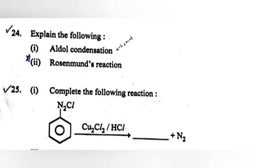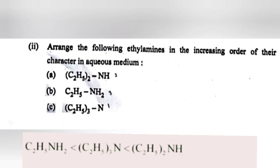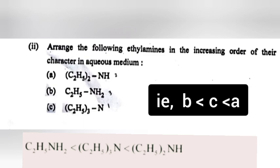Question 25, Part 1: Complete the following reaction. Answer: Chlorobenzene. Part 2: Arrange the following alkyl amines in the increasing order of their basic character in aqueous medium. Answer: C2H5NH2 less than (C2H5)2NH less than (C2H5)3N less than C2H5NH2 less than C2H5NH.